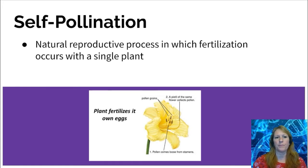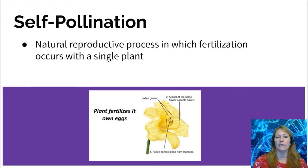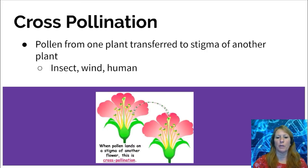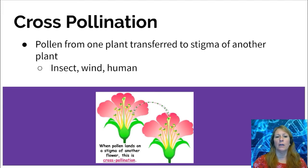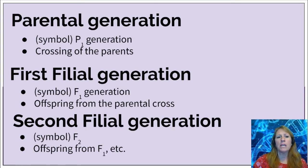Plants can either do self-pollination or cross-pollination. Self-pollination means within the same plant — the pollen simply drops down into the ovule and fertilizes the egg. Cross-pollination is between different flowers, either the same species or two different species — pollen travels from one flower to another to reach the eggs. Cross-pollination can happen via insects like bees, wind, or even humans who use a brush to transfer pollen from one plant to another.